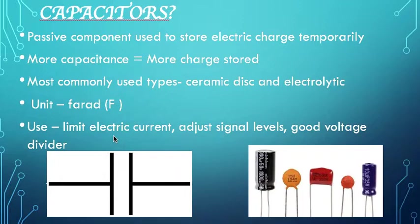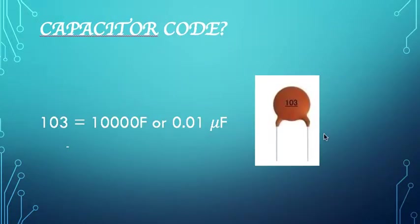Apart from the various types, the most commonly used capacitors are ceramic disc and electrolytic capacitors. And the unit of capacitor is F-farad or you can say microfarad as well. Again, the usage of capacitors - they are used to limit electrical current, adjust signal levels and it also is used as a good voltage divider. This is how a capacitor code looks like. 103 means one number is here, the second zero is here and 3 means you have to put 3 more zeros. This is the value: 10,000 farads or 0.01 microfarad. The coding of capacitors is pretty easy compared to the resistors.